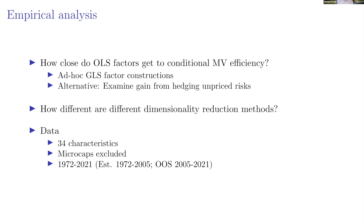In the remaining time I want to talk about empirics. The main goal is to look at heuristic factors and ask: empirically, how inefficient are they? To answer that we need to get to the efficient MVE portfolio somehow. Since we don't directly observe it, we take two approaches: first, a naive estimator of sigma using three-year rolling data and PCA approximation with 30, 50, or 100 factors; second, the hedging approach.